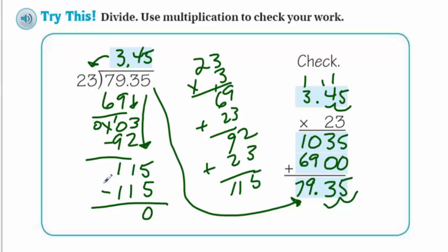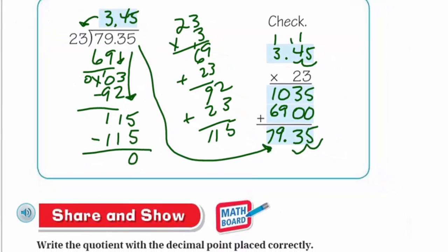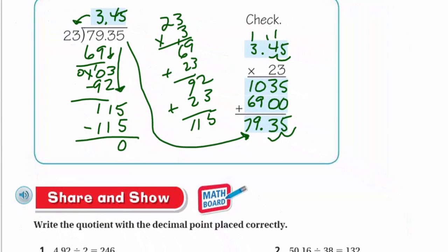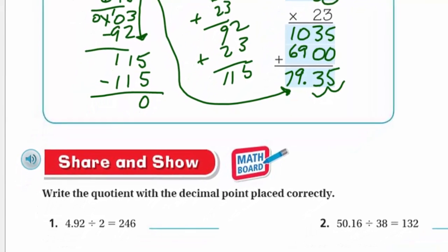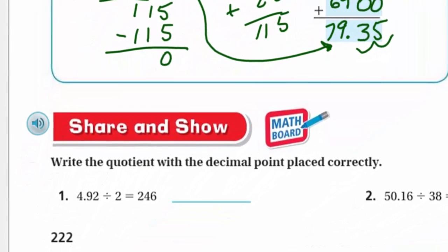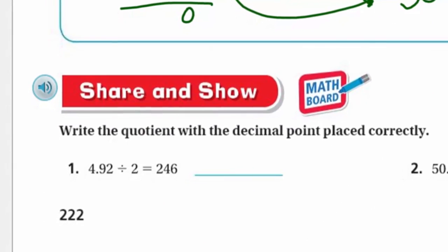Now, let's do the last section, share and show. You, again, want to just do this on your math board first. Then hit the video on play again and see if my answers match up with yours. It says write the quotient with the decimal point placed correctly. Okay. So we have here 4 and 92 hundreds divided by 2 equals 246. Well, then it just means I need to put that decimal right between the 2 and the 4. You could take this number then and multiply it by 2 and see that that would happen. And it would.